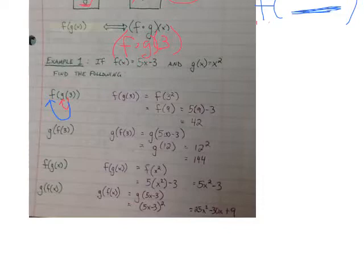If we go in the opposite direction, f of x is on the inside, so we take 5x minus 3 and we plug it into the variable of g. And we're going to get 5x minus 3 quantity squared, which I simplified down to 25x squared minus 30x plus 9.